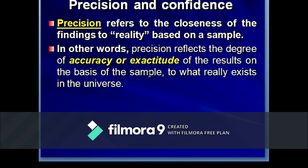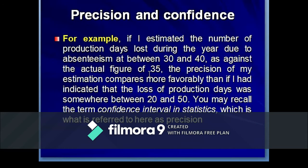The fifth hallmark is precision and confidence. Precision refers to the closeness of the findings to reality based on the sample — it reflects the degree of accuracy or exactitude of the results relative to what really exists in the universe. For example, if I estimated production days lost due to absenteeism at between 30 and 40 against the actual figure of 35, my estimation is more precise than if I had said the loss was somewhere between 20 and 50. This is similar to the confidence interval in statistics.